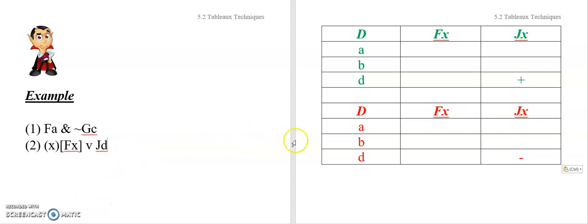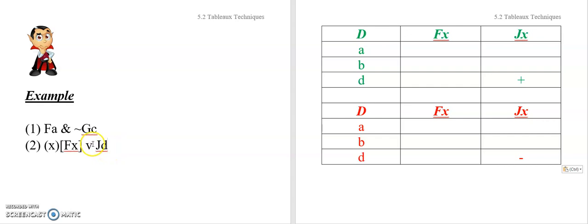Let's look at the interpretation that makes this true. Three objects, and notice the main connective is OR, so in order for it to be true, I need at least one of the two disjuncts to be true. Easiest thing to do is to make D have the property J, which I did here. Fill in the others any old way you want — multiple possible solutions are available. This will result in an interpretation that makes this sentence true. Now for the false case: in order to make this sentence false, I need to ensure that both disjuncts are false. So I made D lack the property J, making this disjunct false.